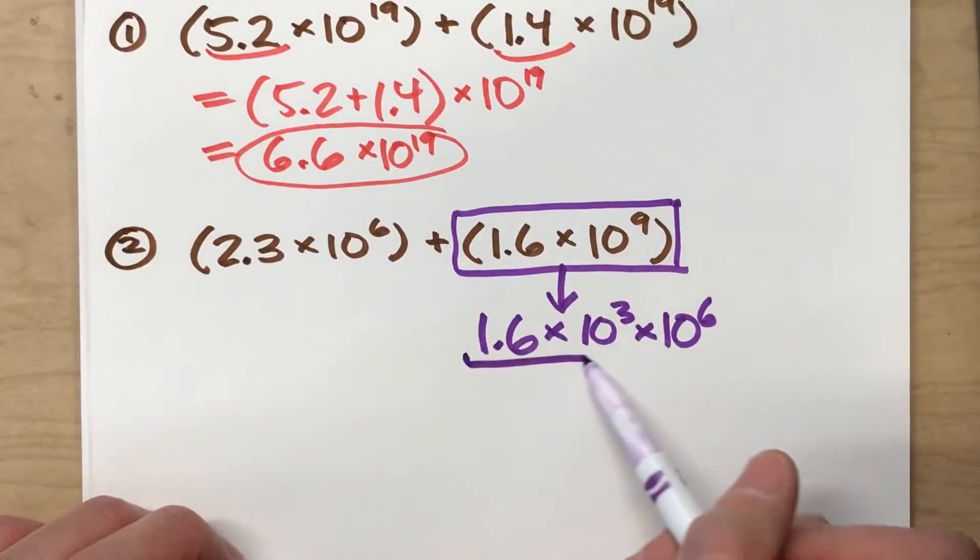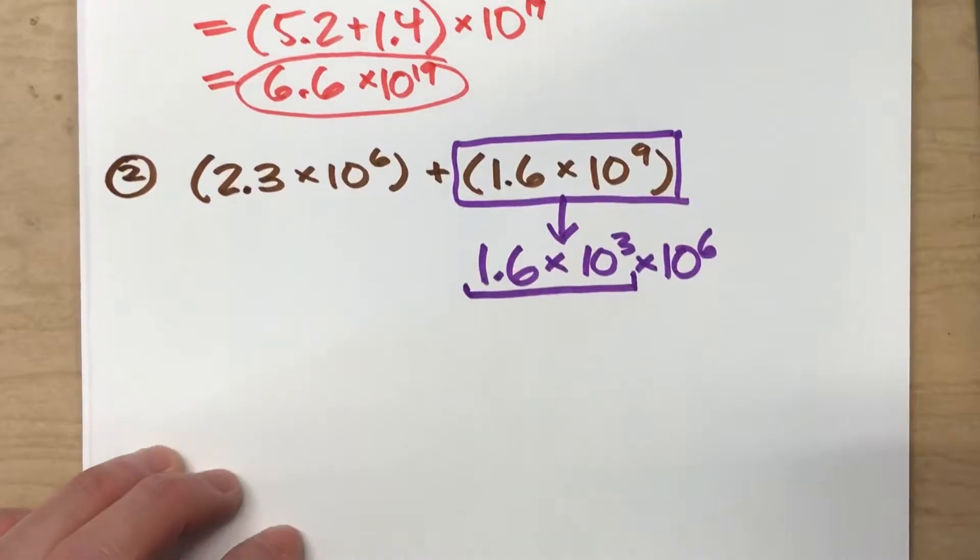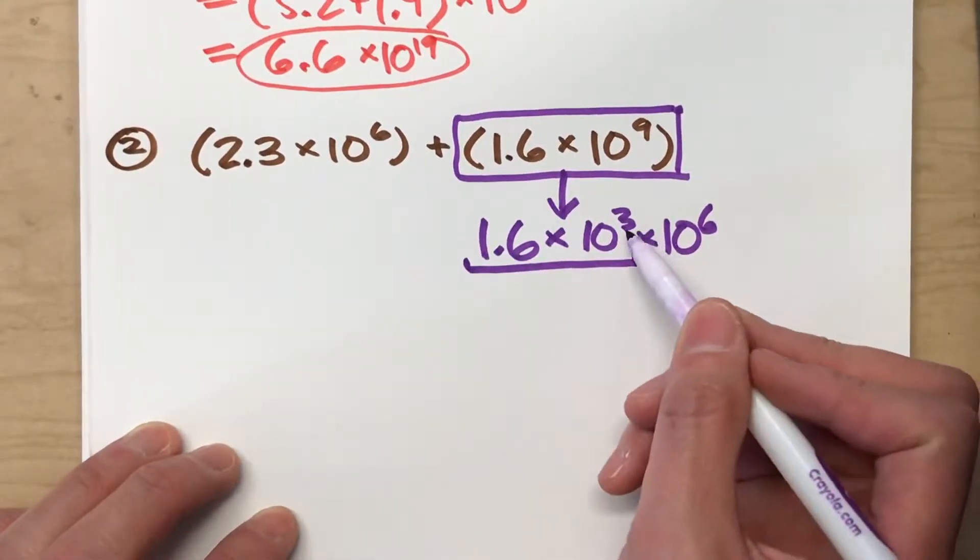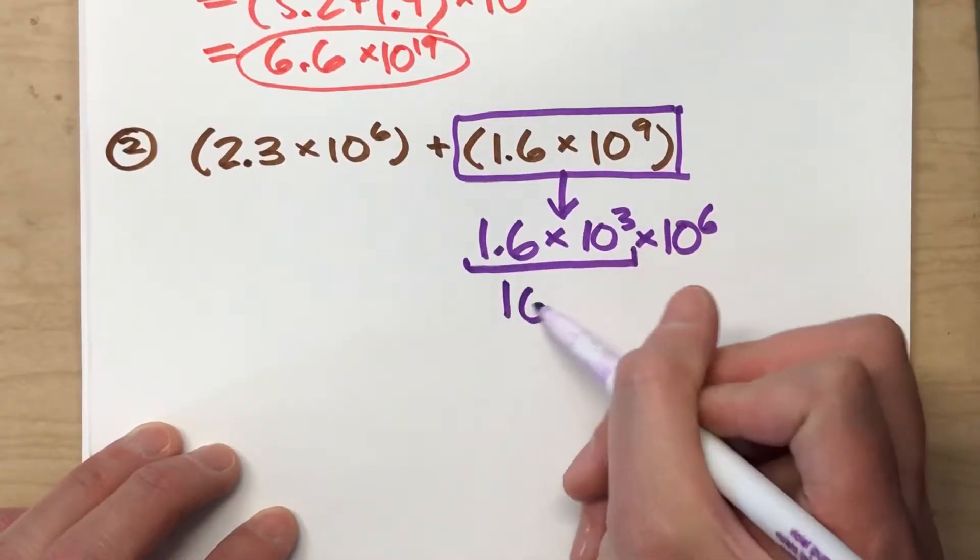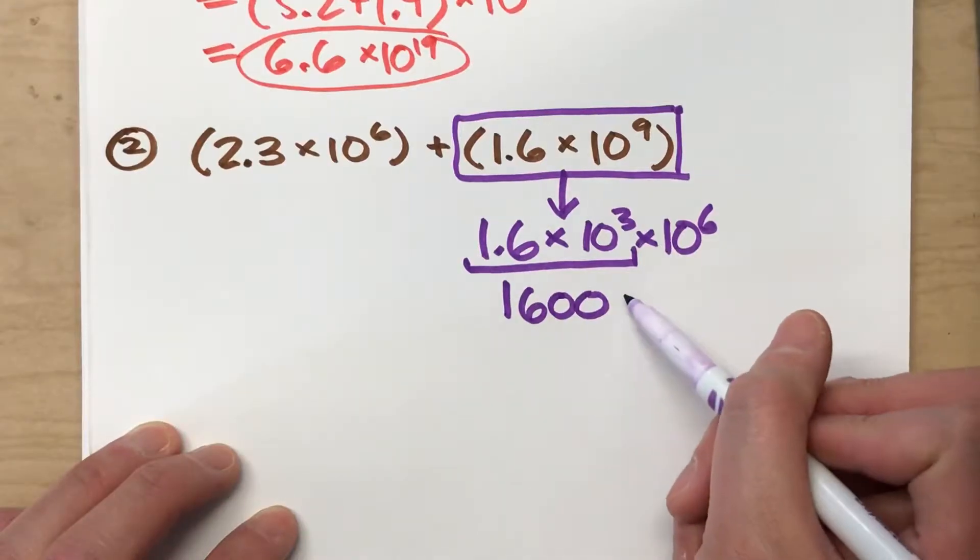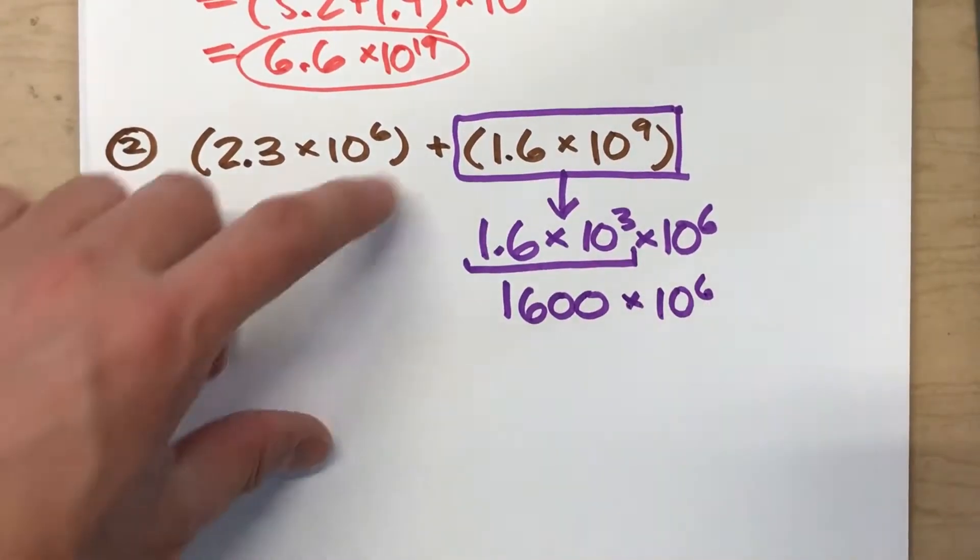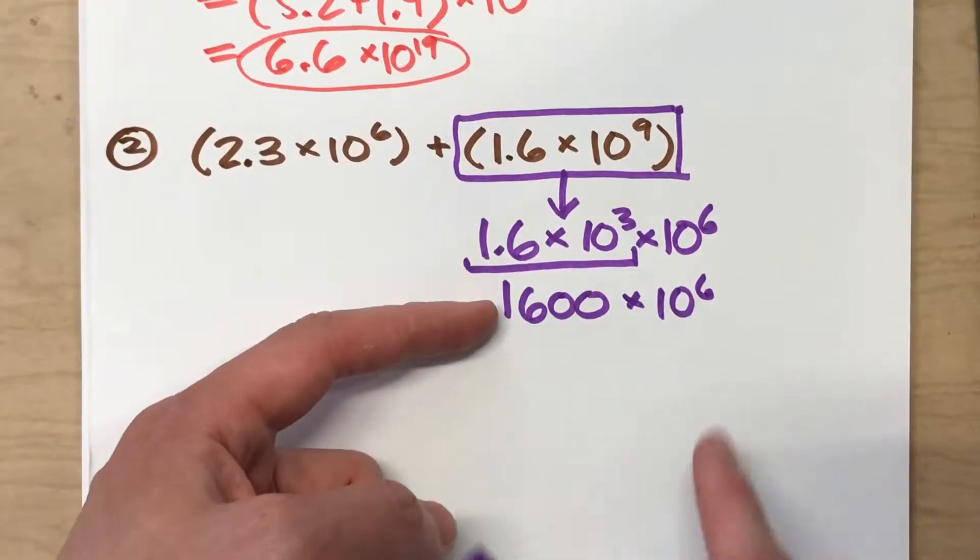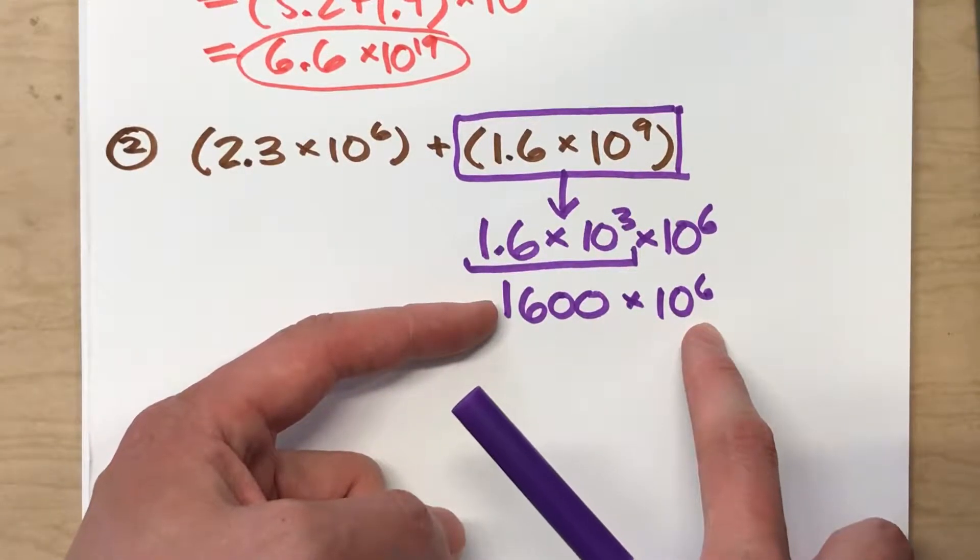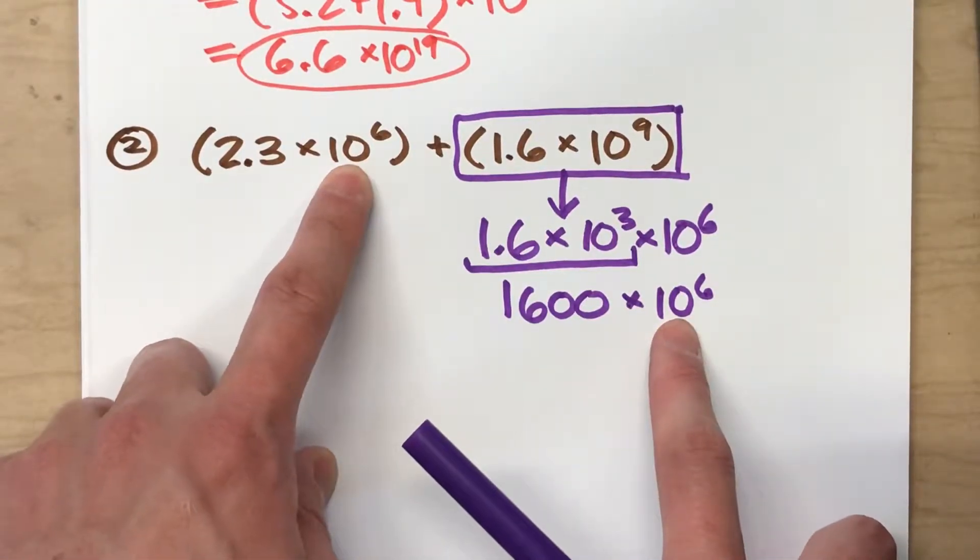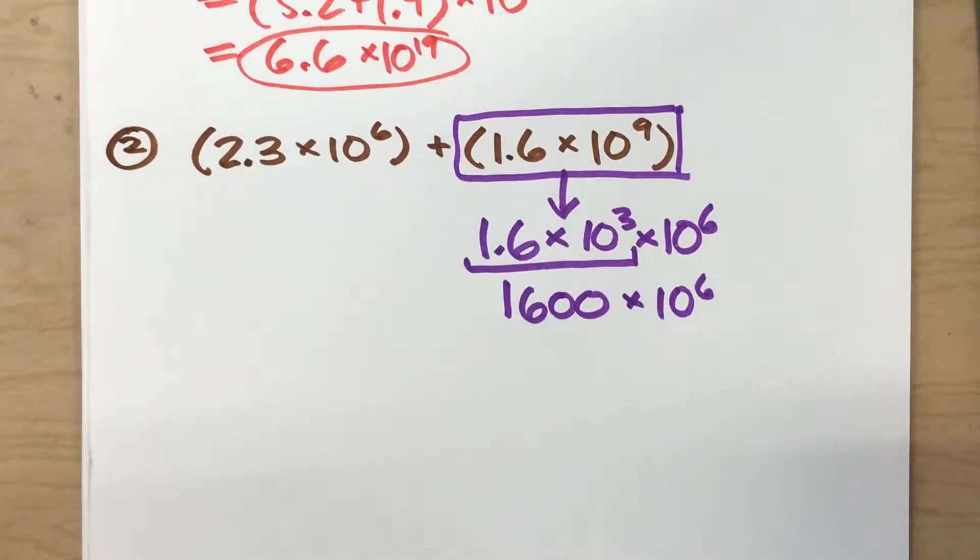Because when I combine these together, 1.6 times 10 to the 3rd power simply means move the decimal over 3 places, that just becomes 1600. And I'll drop down my 10 to the 6th power. So what I've basically done is changed my original number into 1600 times 10 to the 6th power. And if you notice, now these two numbers have the exact same power of 10, and now I can actually do the easy computation with it.